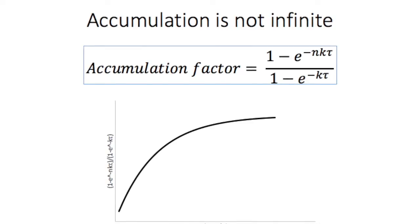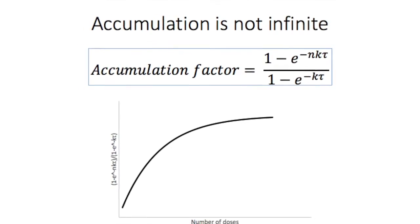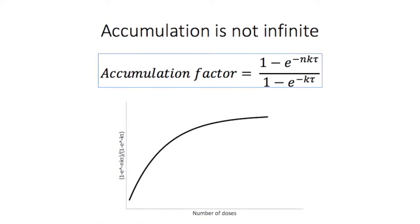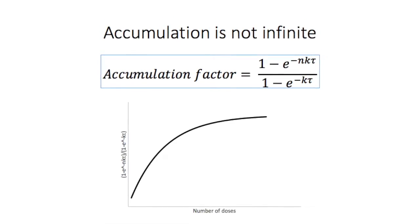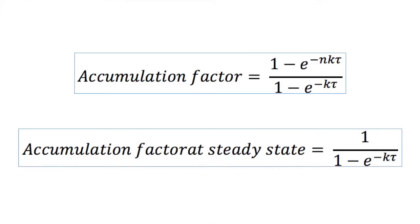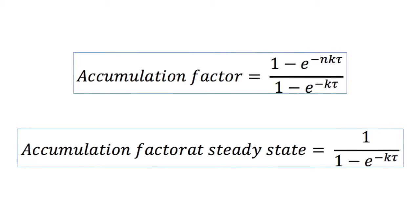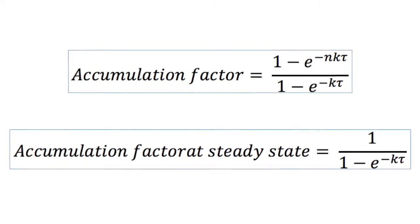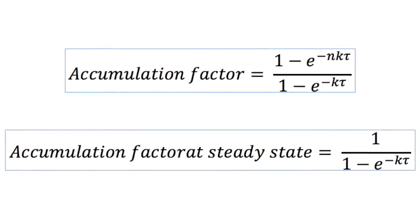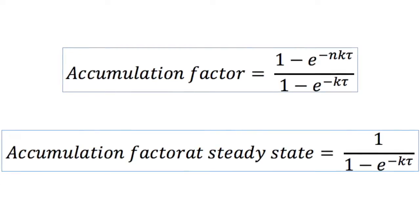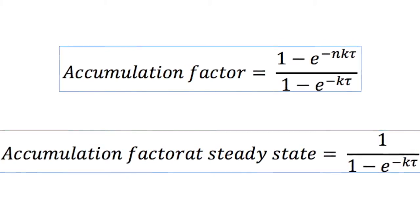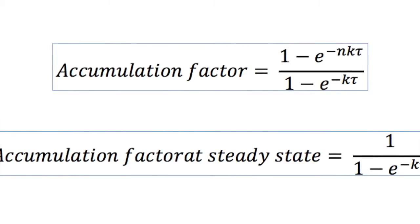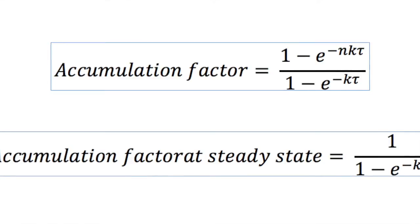We can examine this from the perspective of the accumulation factor. As the number of doses increases, the accumulation factor tends towards a constant. This is because the E term in the numerator tends towards zero for very large values of n, which represents the number of doses. When the accumulation factor becomes constant, we call it the accumulation factor at steady state. The value of this accumulation factor is larger the smaller the values of the dosing interval (τ) and the elimination rate constant (k), which results in a greater value of the E term in the denominator. This results in the overall denominator being a smaller decimal value, and the reciprocal of a smaller decimal is a larger number, therefore the accumulation factor at steady state will be greater.